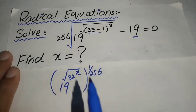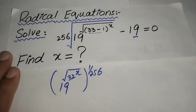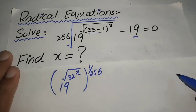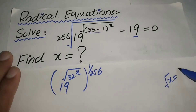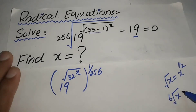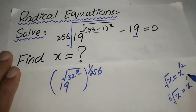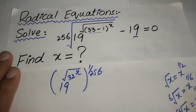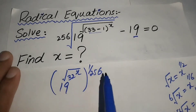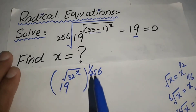We use the property of radical equations: if we have x under a square root, we write it as x to the power 1/2. Similarly, if we have 256 under a radical, we write square root of 256 as x to the power 1 over 256.